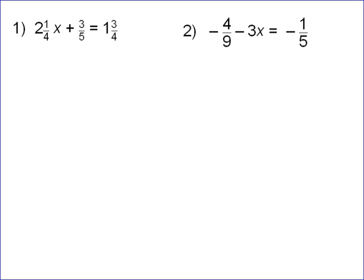The following problem we're asked to solve these equations. These are just equations with fractions, so you just treat them like normal fractions. The first step is to get the 2 and 1 fourth x by itself, so we just subtract 3 fifths.